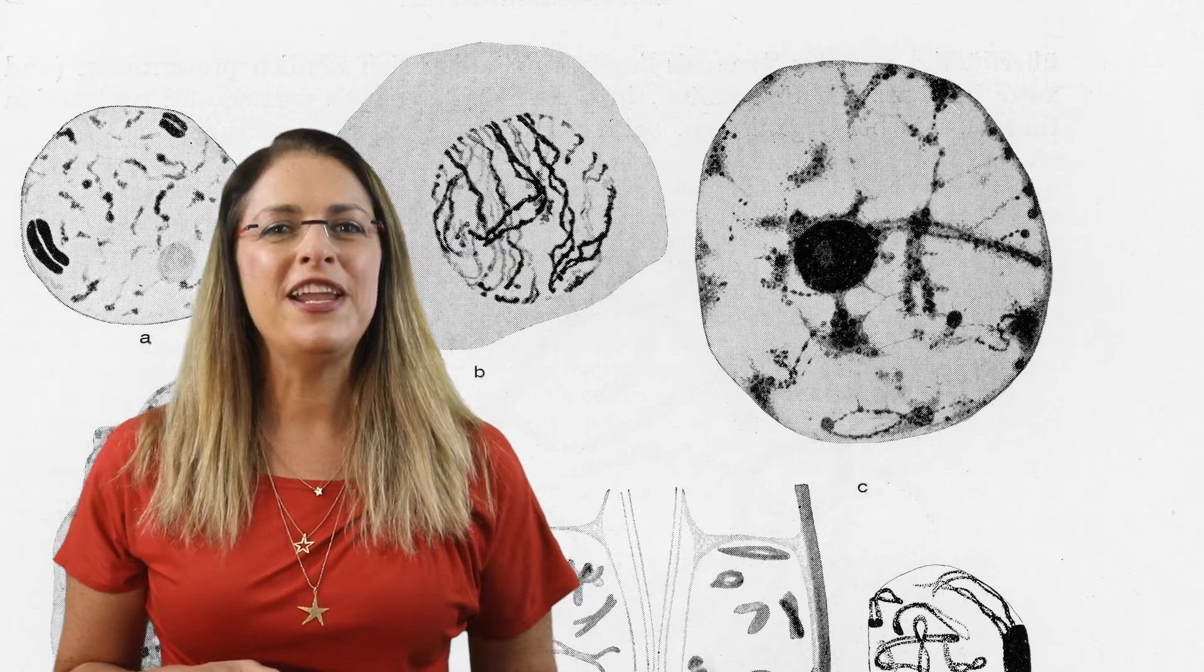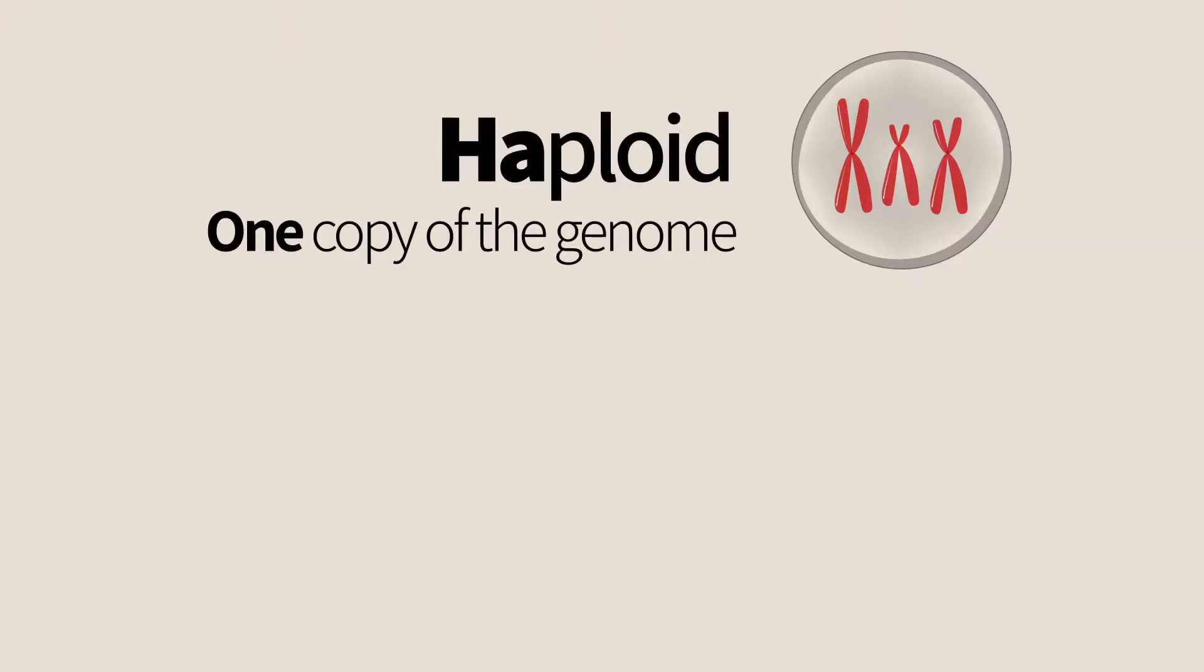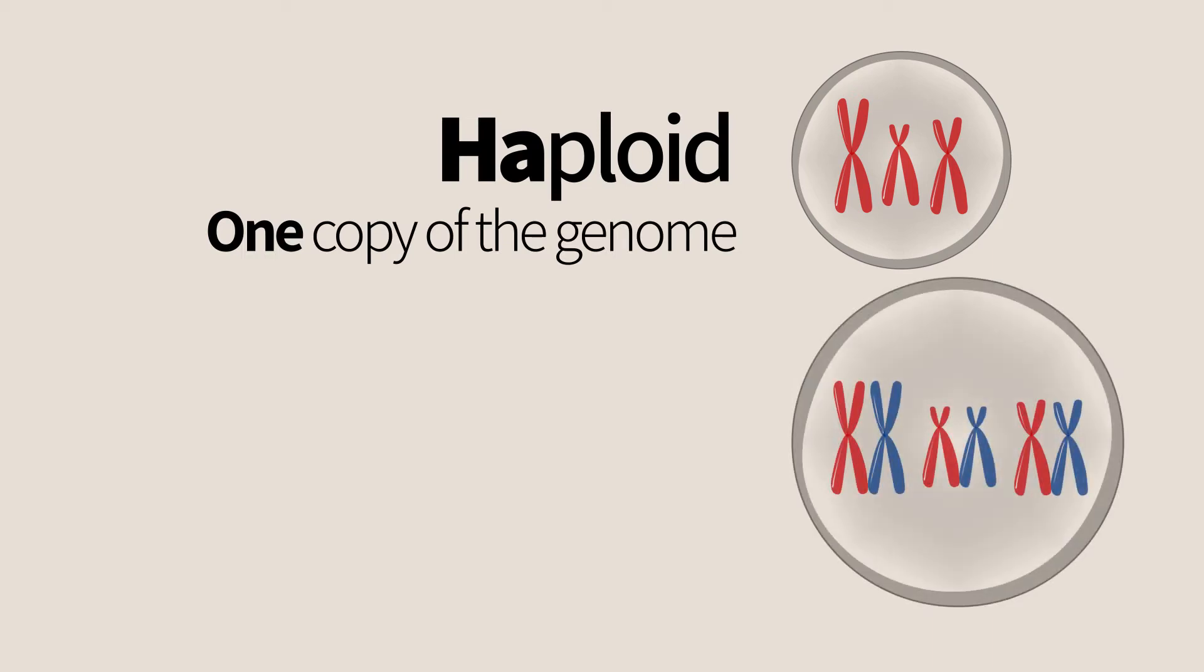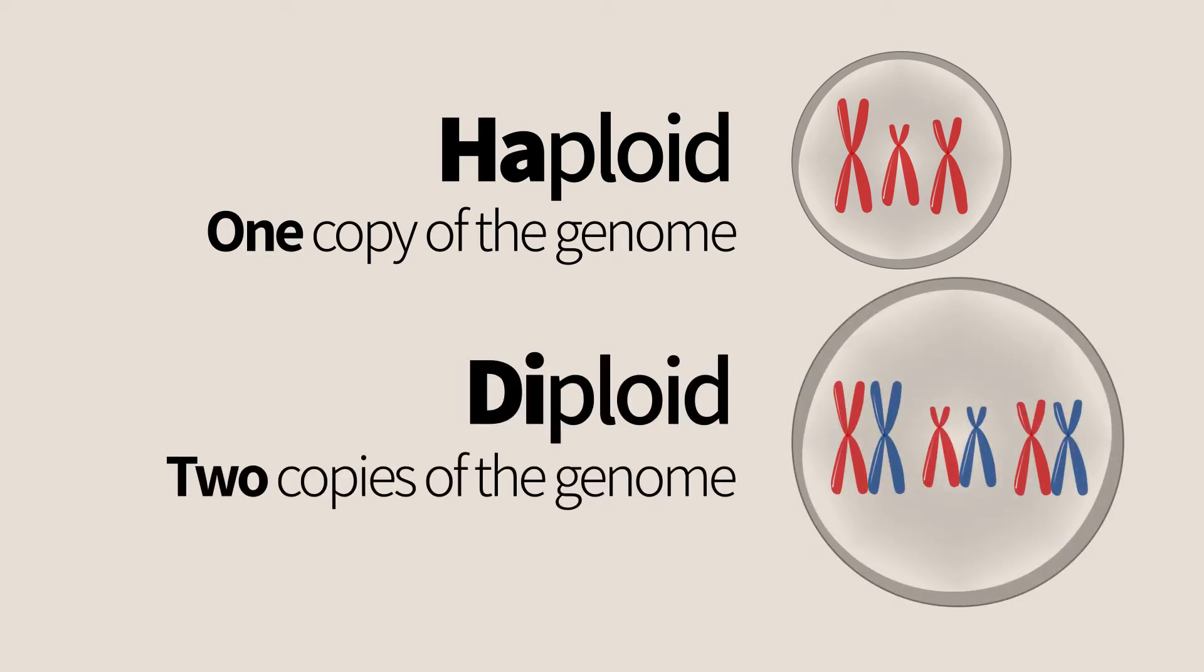In the previous chapter, we learned the term haploid, having one set of chromosomes, and diploid, having two sets of chromosomes. The fusing gametes are haploid, and the offspring is diploid.